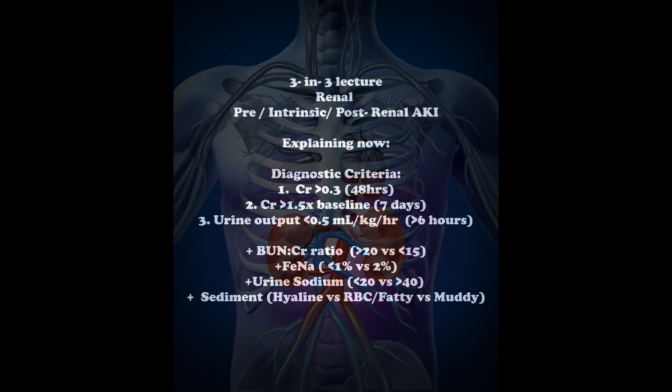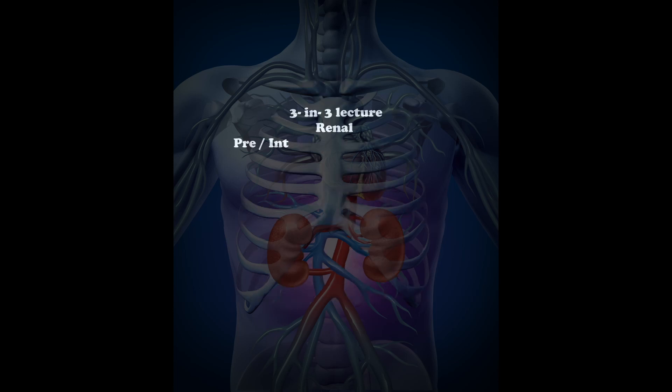Urine sediment analysis is also key: in pre-renal azotemia, look for hyaline casts; in intrinsic disease, look for red blood cell casts in glomerulonephritis, fatty casts in nephrotic syndrome, or granular muddy brown pigmented casts in acute tubular necrosis from renal tubular epithelial cells. In post-renal cases — such as stones or bladder cancer — you may see hematuria, and neurogenic bladder may prevent urination entirely.